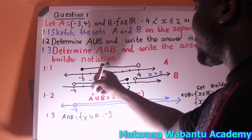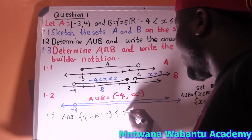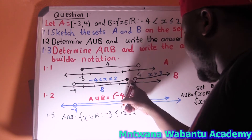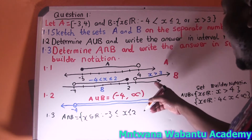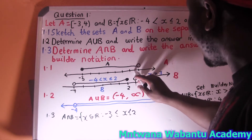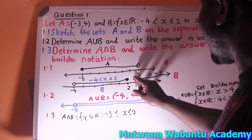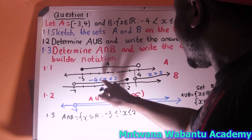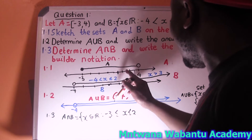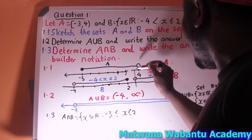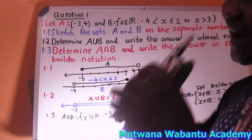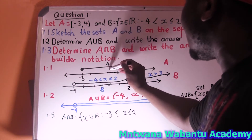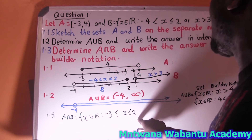In set builder notation, A intersection B: negative 3 is including because both sets have something there — a closed dot — all the way to 2. At 2, both sets have a point, so 2 is including as well. Let me realign the number line so it's clearer: 0, 1, 2, 3, 4 lined up properly. From negative 3 to 2 they have something in common.